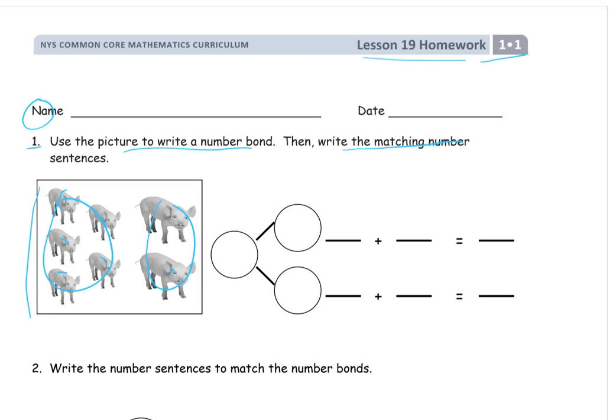But together there are seven. So our total is seven. We'll put that here. And then there's the five piglets and the two pigs. Now we'll write our matching number sentences. We can do five plus two. You can have two plus five there. It doesn't matter which number sentence you have first or second. Five plus two equals seven. And since we can switch the addends, it doesn't matter which addend goes first, they're still going to add up to seven.